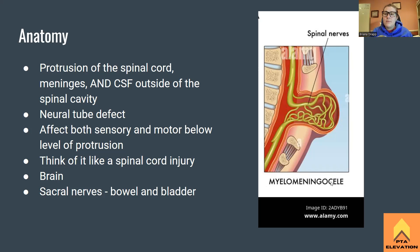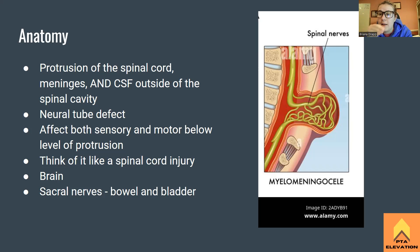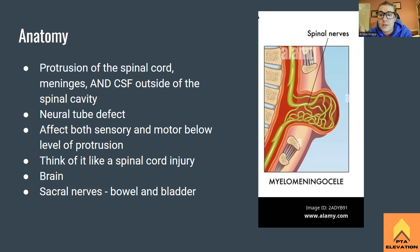Remember our meninges: we have the dura mater, arachnoid mater, and pia mater, from most outside to most internal. It's going to be a protrusion of the spinal cord, meninges, and cerebrospinal fluid. If it's just CSF, it's spina bifida occulta; if it's meninges and CSF, it's meningocele. Make sure you know the difference between the types, but today we're focusing on myelomeningocele.